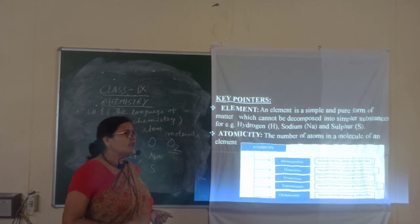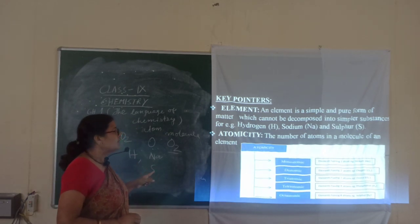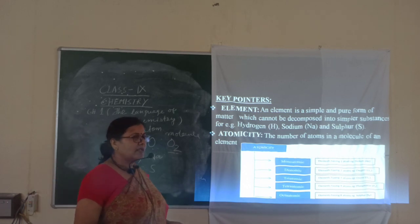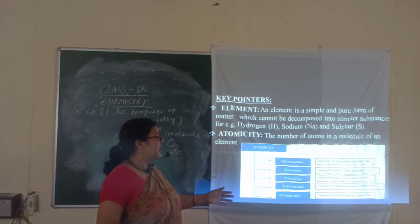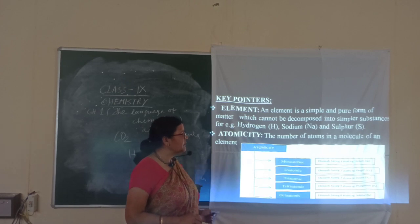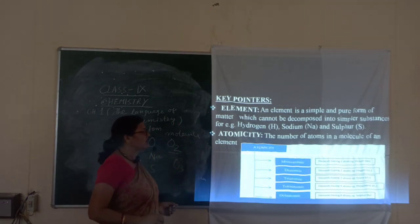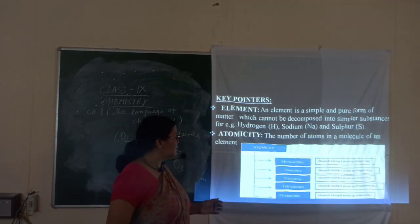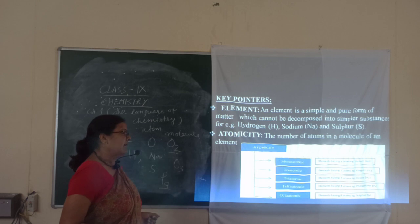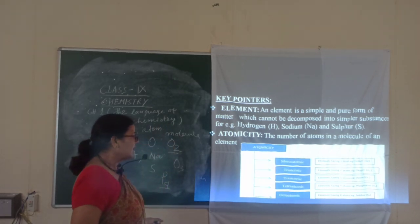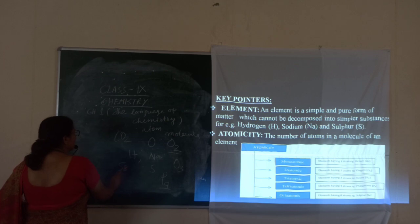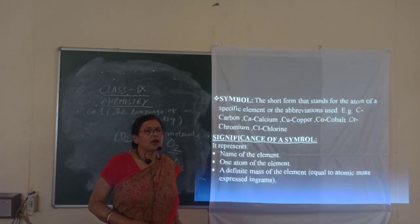Now we are going to atomicity — that is, the number of atoms present in the molecule. The elements which are having one atom are called monoatomic, and the elements which are having two atoms in their molecules are called diatomic. The elements which are having three atoms, like ozone O3, are called triatomic. Phosphorus P4 has four atoms, hence it is called tetraatomic. And sulfur S8, which consists of eight atoms, is called octaatomic.